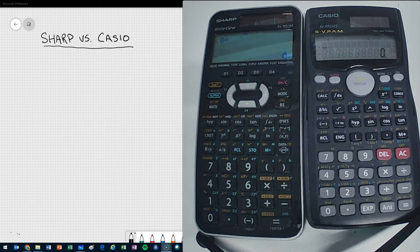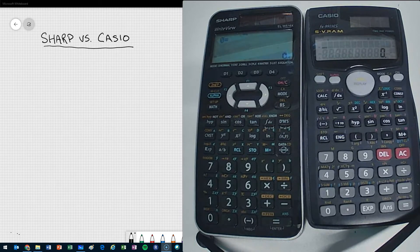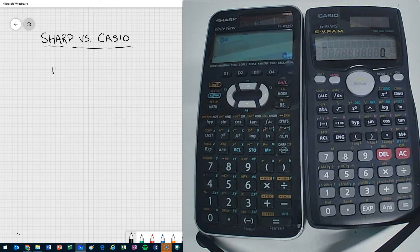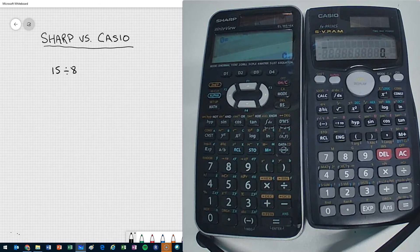So I have two calculators set up. I have a SHARP and a CASIO, and I'm going to run through a couple of calculations on both, just so we can see the difference. So let's just pick some value, and I'm going to say, what if I took like 15 and I divide it by 8 on both calculators? So let's just see what we get.